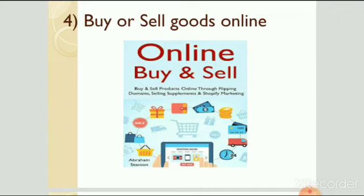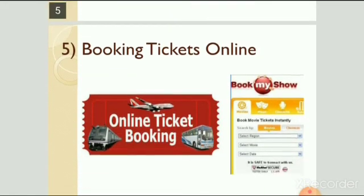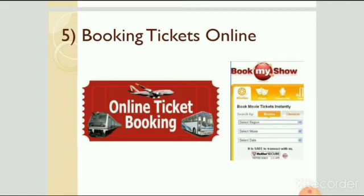The fourth use of internet is to buy or sell goods online. Nowadays we can buy or sell new and old goods — anything or objects — using the internet. Online shopping is very popular today. The fifth use is booking tickets online. We can book tickets for traveling, for example airline tickets and railway tickets. We can also book movie tickets online using BookMyShow.com.